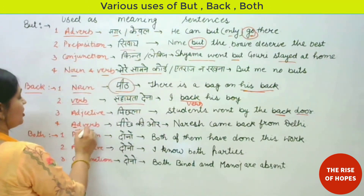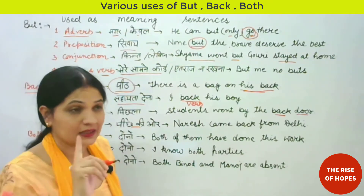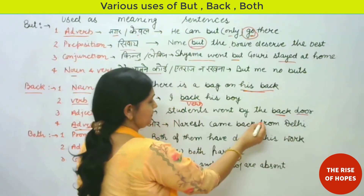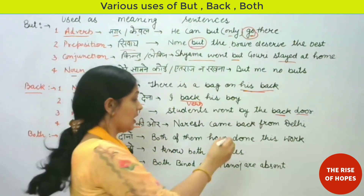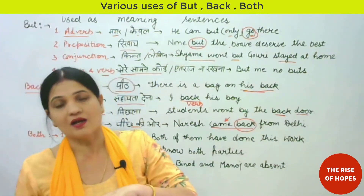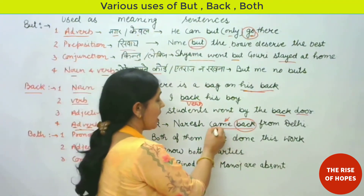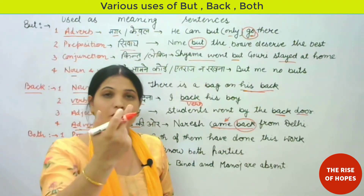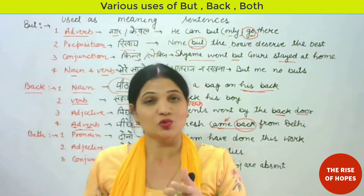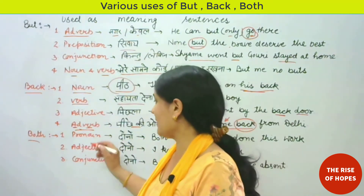Next, 'back' as an adverb adds something to the meaning of a verb. Here it indicates direction — it means 'wapas' or returning. Example: 'Naresh came back from Delhi.' Here 'back' is telling us about the verb 'came' — came back, returned. It tells us about the direction of the action, so it is used as an adverb.